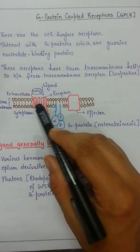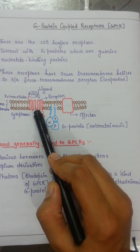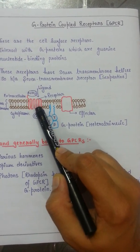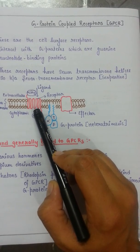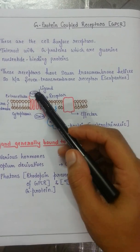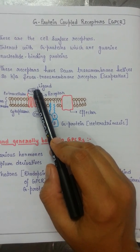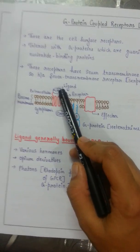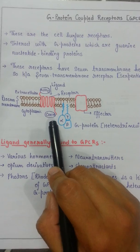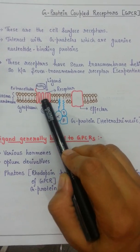Now coming back to the structure of your G-protein coupled receptors: these are transmembrane receptors with seven transmembrane helices. That is why they are also known as seven-transmembrane receptors or serpentine receptors. As mentioned, they have two domains — the extracellular domain, which has the amino group attached to it, and the cytoplasmic domain.